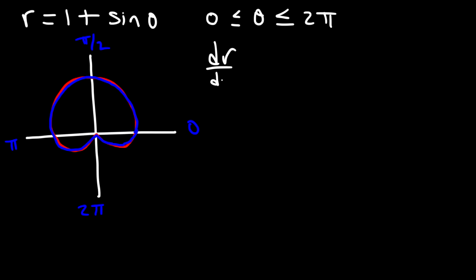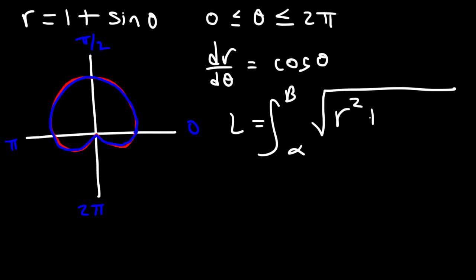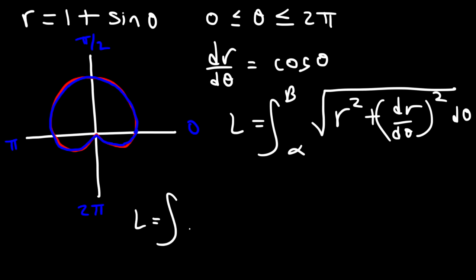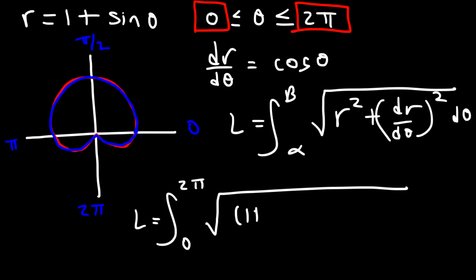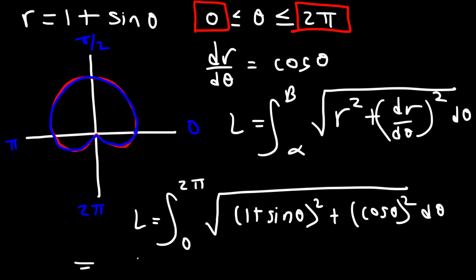The first thing we need is dr/dθ. The derivative of 1 plus sine theta is cosine theta. Using the arc length formula, the integral runs from alpha = 0 to beta = 2π, with r = 1 + sine theta and dr/dθ = cosine theta. If you plug this integral into your graphing calculator, you should get 8 as your answer — that is the arc length from 0 to 2π.